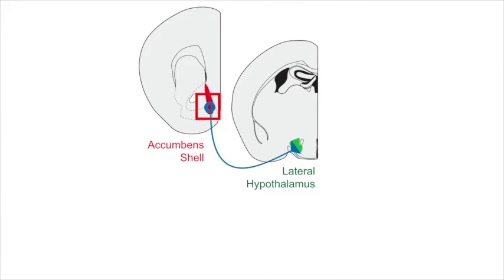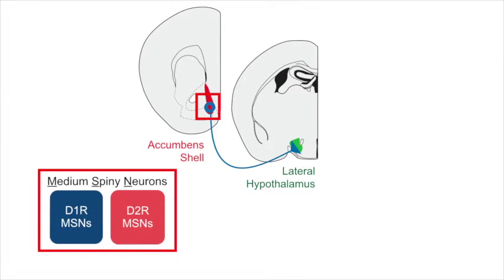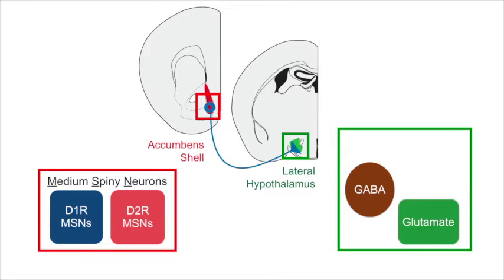Output neurons of the nucleus accumbens shell are inhibitory medium spiny neurons, but can be separated into two distinct classes based on the type of dopamine receptors they express. The lateral hypothalamus contains inhibitory neurons, but also excitatory and neuropeptide releasing cells.